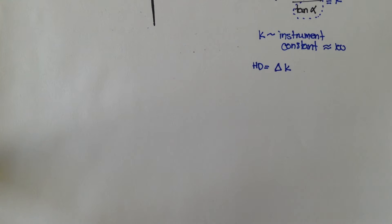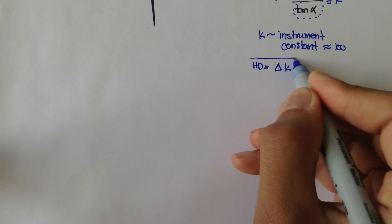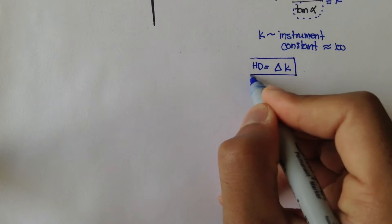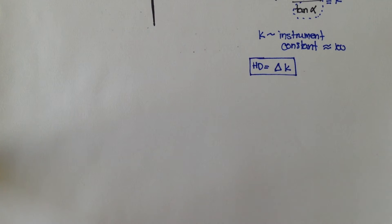Welcome back. We just got done defining what our horizontal distance was. It was the delta value times the k value, and k is the instrument constant, usually equal to 100.